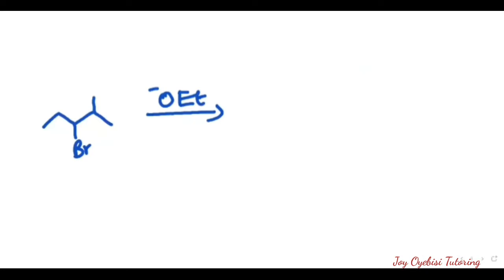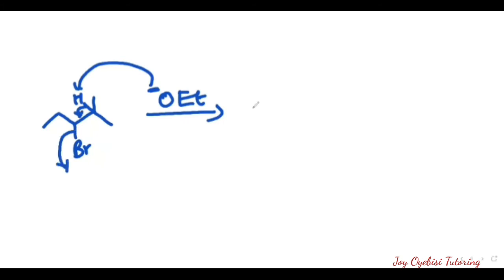This next example involves a secondary alkyl halide. The base given favors E2 reaction mechanism, so this will be E2. Remember that the hydrogen must come from the opposite side — anti to the leaving group. The base picks up that anti hydrogen, the bond breaks, and the halogen is removed in one step.